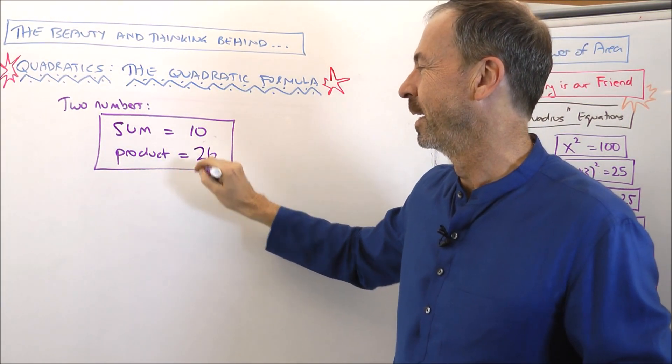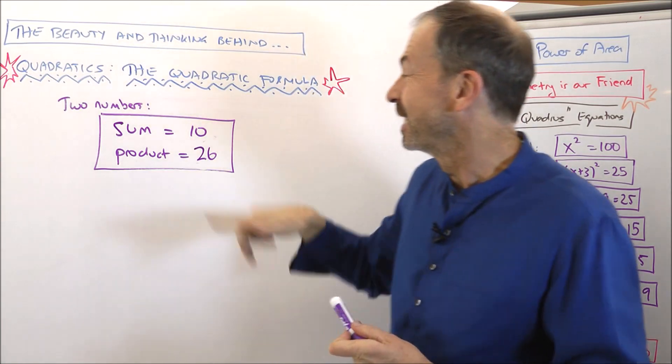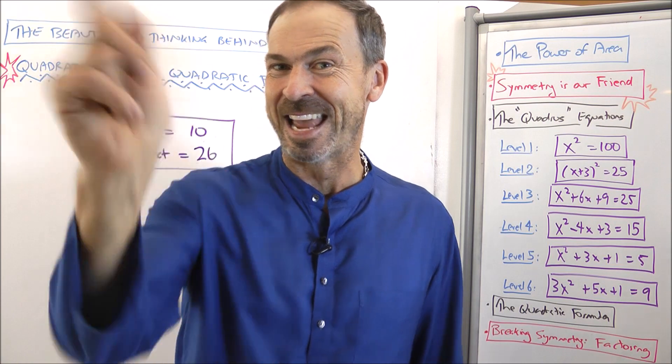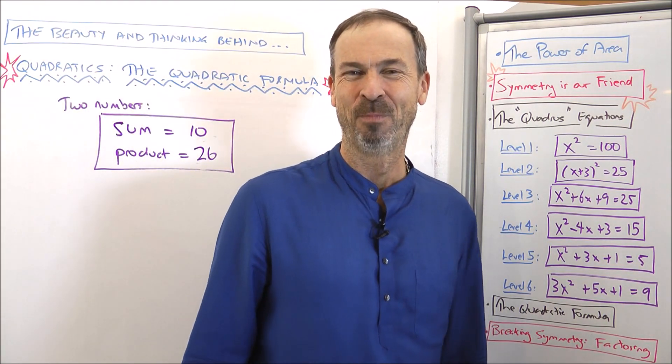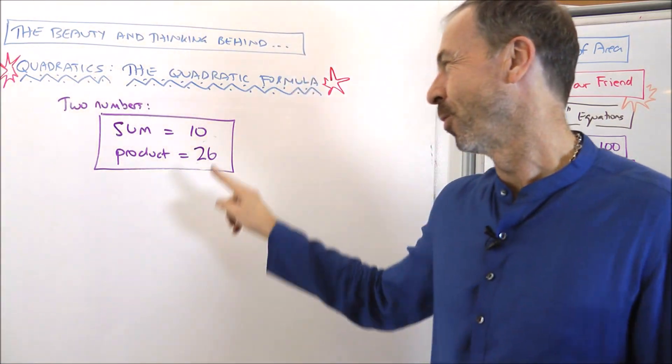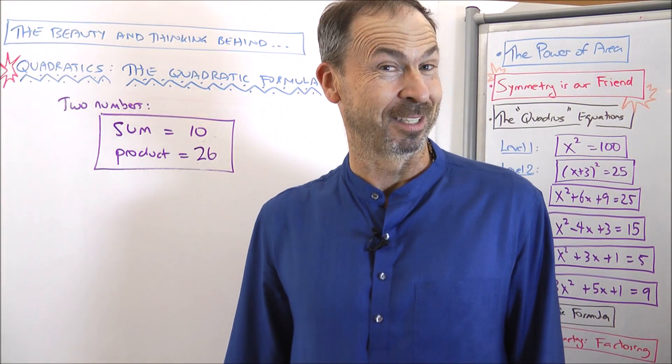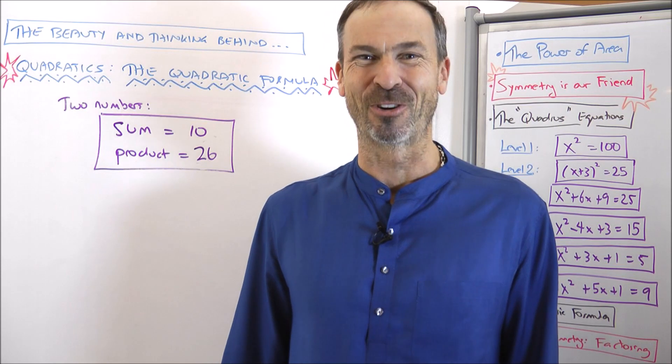Now things aren't so straightforward. Which two numbers have a sum of 10 and multiply together to give a product of 26? Can you find some? Can you do it? Give it a try.